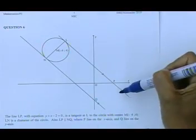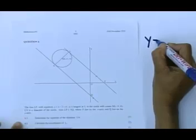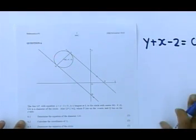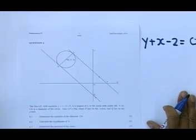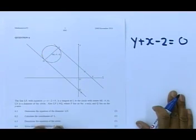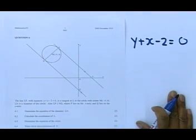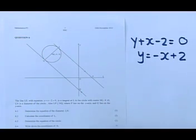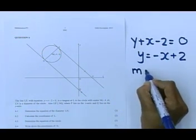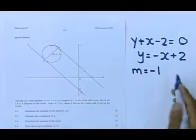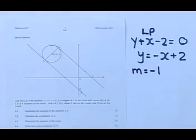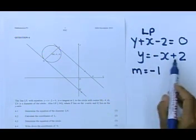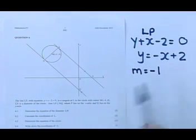The line LP with equation y plus x minus 2 is equal to 0. That is the equation of line LP. What I want you to do is to put this equation in standard form immediately. y is equal to minus x plus 2. Standard form. What is my gradient? My gradient is equal to negative 1 and c is equal to 2. Before you even went further, you put it in standard form, getting y alone. What is your gradient? Negative 1.